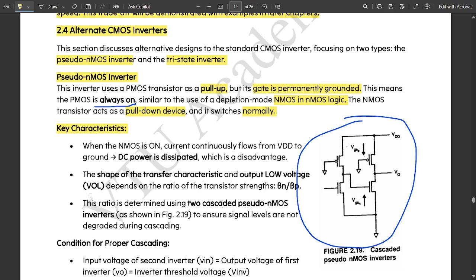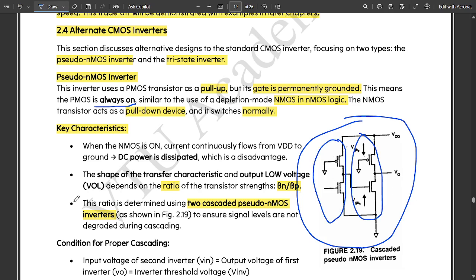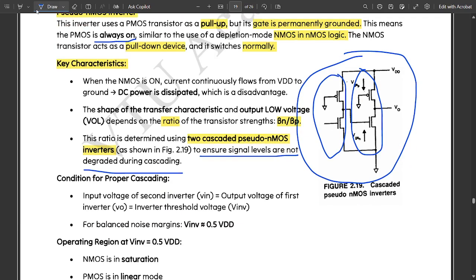The shape of the transfer characteristic and the low voltage depends on the ratio of transistor strengths, that is the beta ratio. This ratio is determined using two cascaded pseudo-nMOS inverters as shown in this figure. Cascaded means they are put in a single branch. This ratio is determined using these two cascaded inverters to ensure signal levels are not degraded during the cascade.